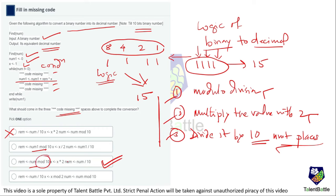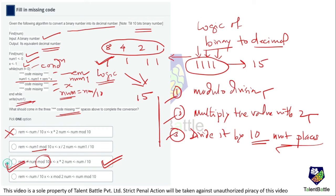In the third option, first I take num mod 10 and pass that to remainder, then x multiplied by 2 is passed to x, giving the remainder in step one, num1 in step two, updated x in step three, and num = num / 10 in the last step. The while condition checks while num is not equal to zero repeatedly, and when false, the updated num1 is returned. So option C is correct.